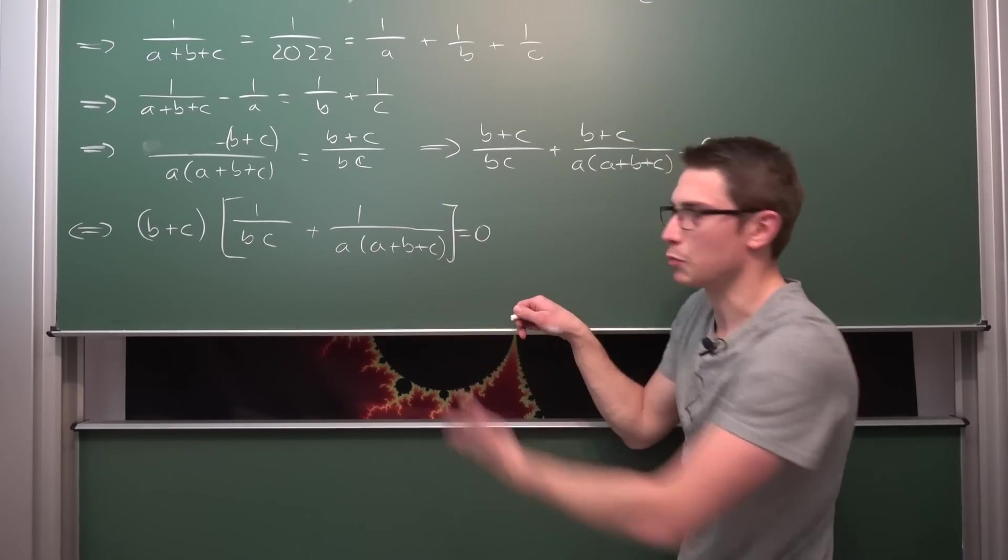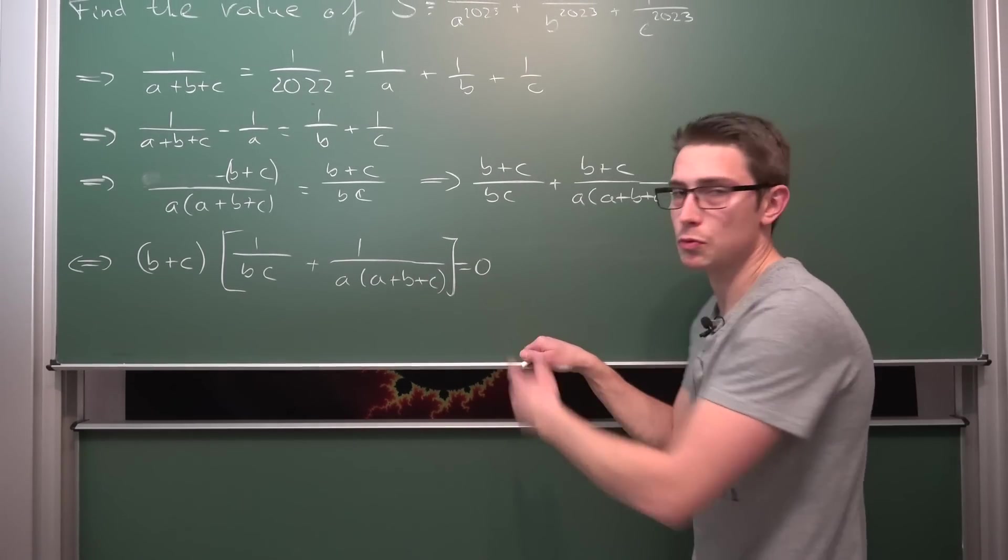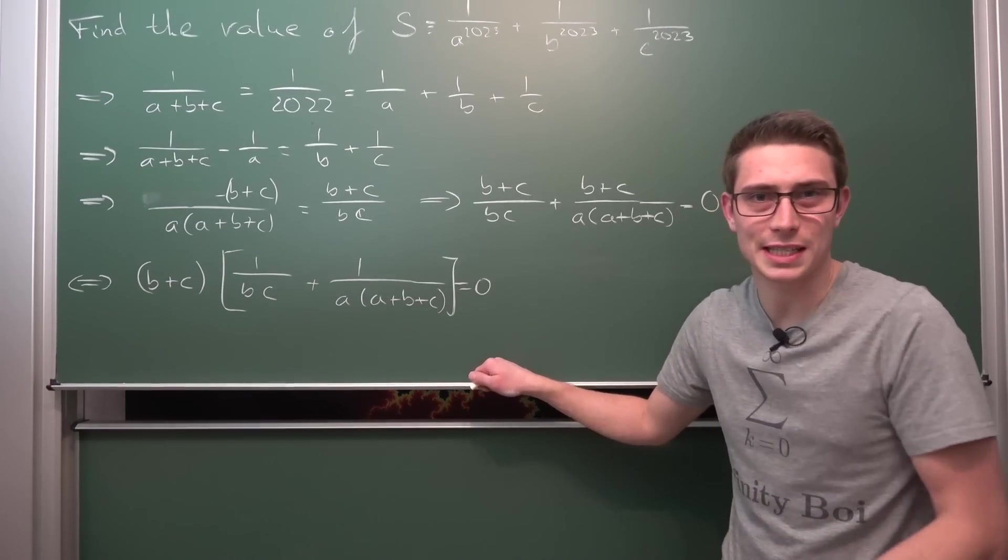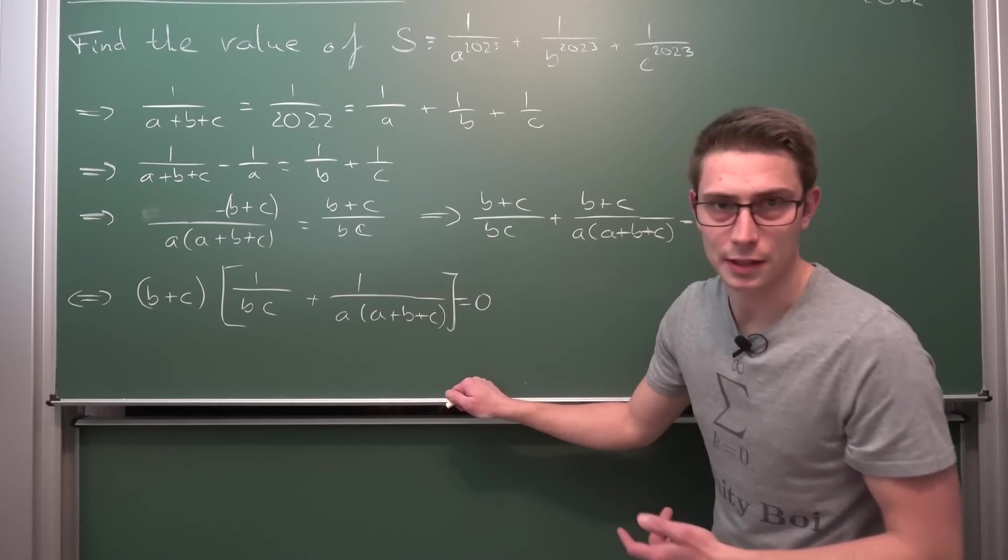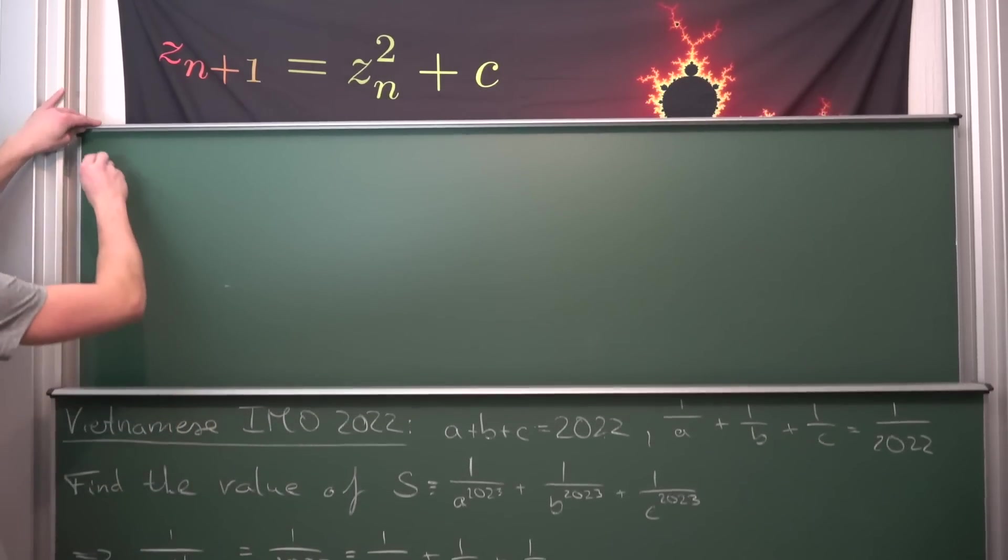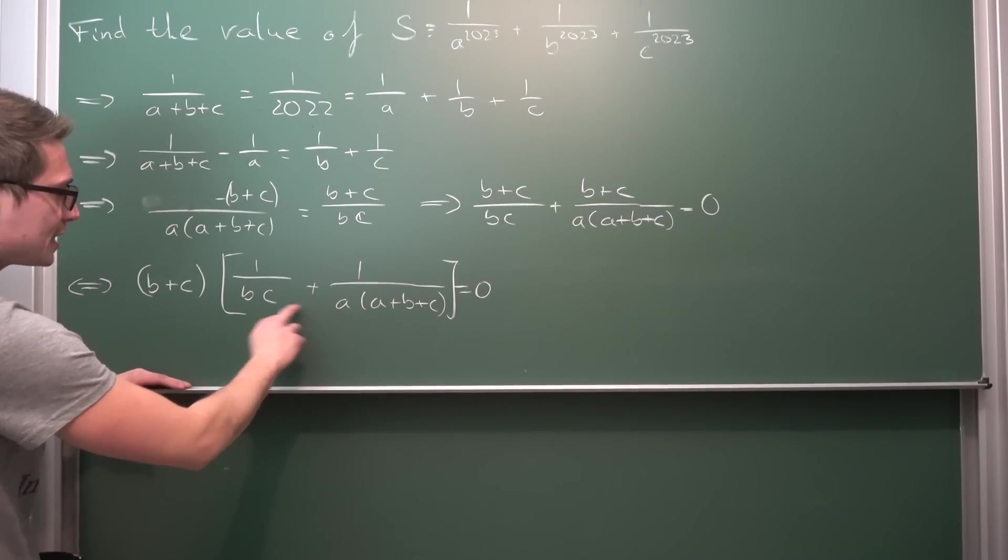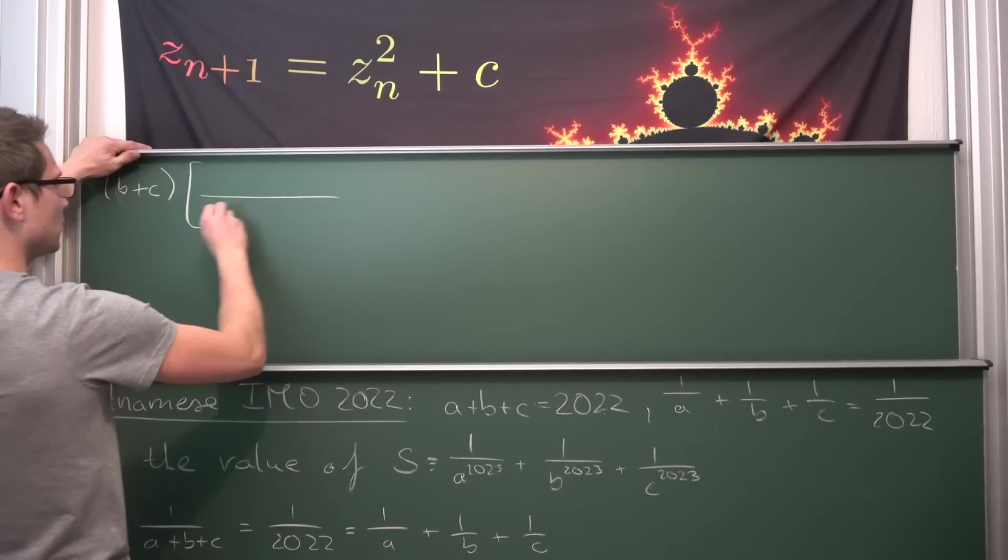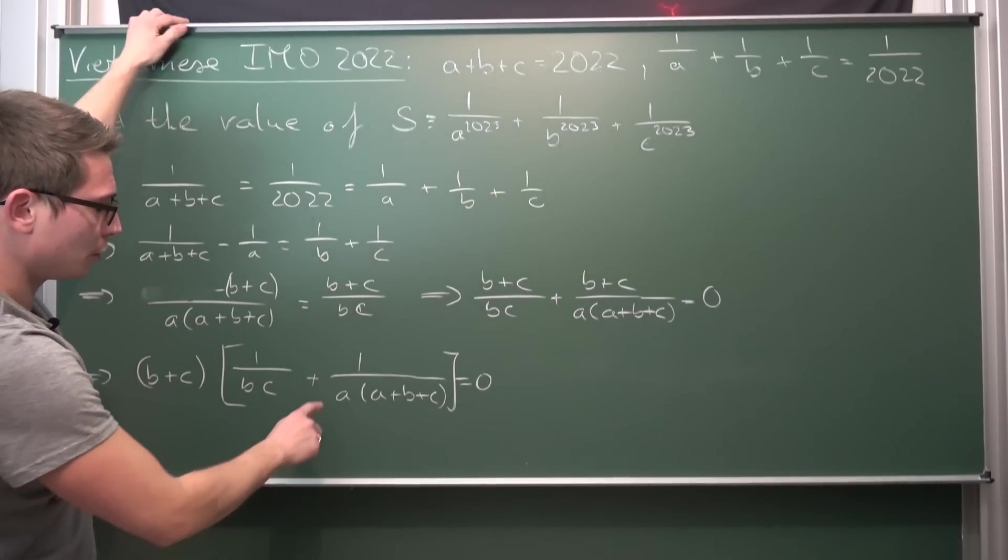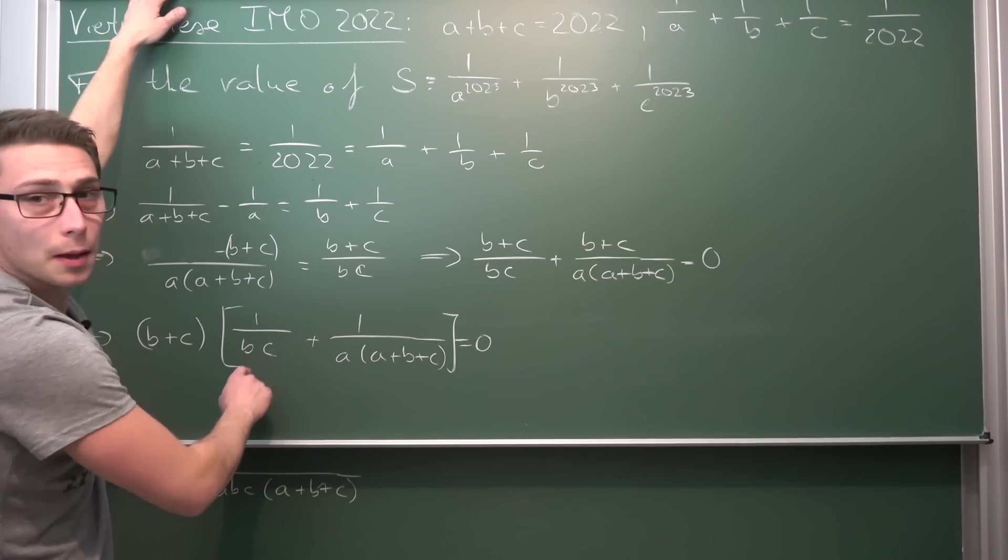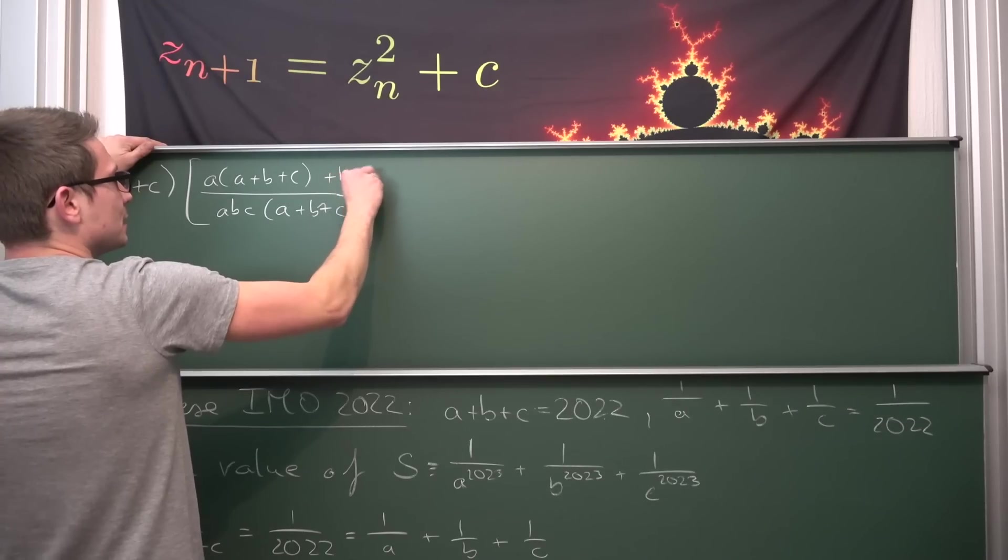And now we can once again bring it onto the same denominator. It's basically just the same game over and over again, just expanding everything and moving on. But now we have something that is equal to zero and then we can see if we can multiply both sides by the denominator such that we are going to get rid of one part of the fraction under the condition that's not equal to zero the denominator obviously. So at first let us expand those fractions here. So B plus C is still going to be there times, our denominator is going to be A times B times C times A plus B plus C. And on top, what do we have? A times A plus B plus C plus B times C. So A times A plus B plus C plus BC is equal to zero.